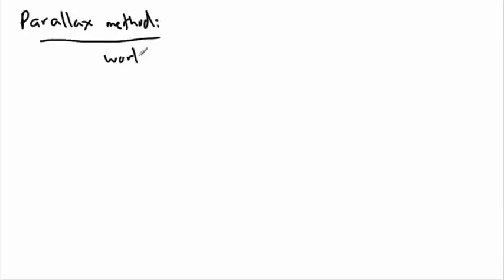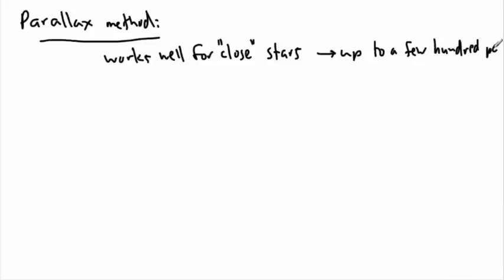So parallax method. It works well for close stars. What do I mean by close stars? I mean stars that are up to a few hundred parsecs. So up to a few hundred parsecs then this works. Now why doesn't it work for anything farther than that? If any farther, I mean in theory it could work for anything, but if it was any farther the parallax angle is so small, we just can't detect it.